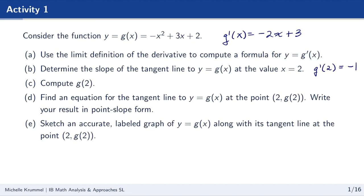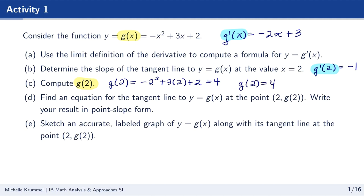Next, we find g of 2. We use the equation for g of x: negative 2 squared plus 3 times 2 plus 2, which is negative 4 plus 6 plus 2, equal to 4. So g of 2 equals 4. We highlight that, along with g prime of 2 equals negative 1.